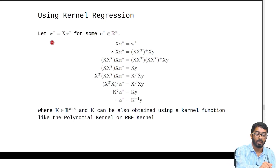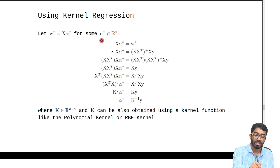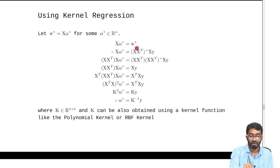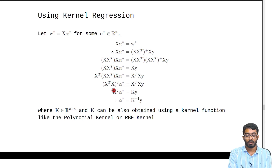We know that w can also be represented as the linear combination of all data points, and the coefficient vector is given by alpha, where alpha is in R^n. On solving that equation further, we get alpha to be K^{-1} y, where K is X^T X. This K can also be obtained using a kernel function like the polynomial kernel or the RBF kernel.